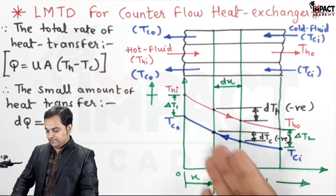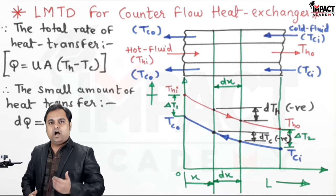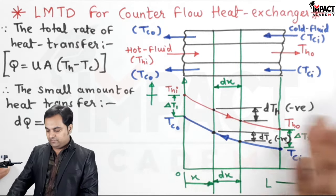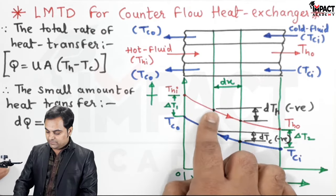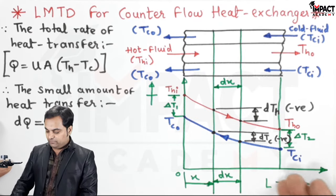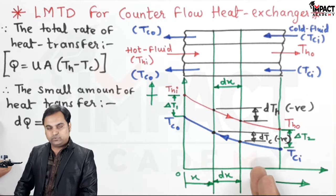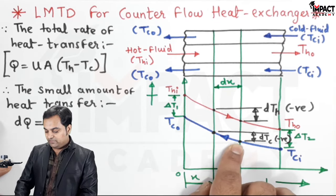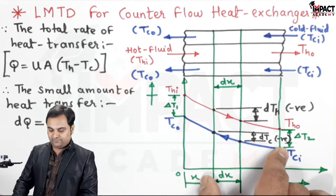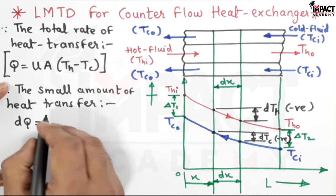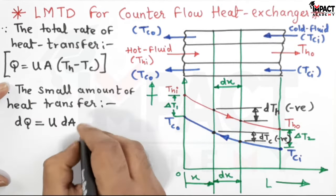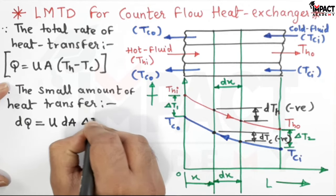To clarify: we analyze everything along the length of the heat exchanger from left to right. There is a drop in the temperature of the hot fluid. The cold fluid temperature increases from right towards left, but since we analyze from left to right, the final value of cold fluid temperature is smaller than the initial value, so dTc comes out to be negative. The small rate of heat transfer is dQ = U · dA · ΔT.